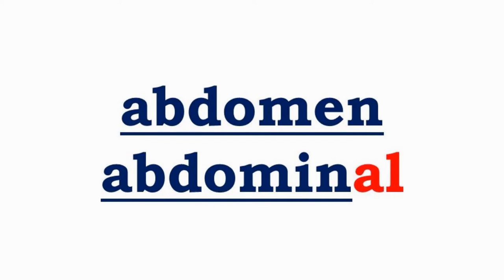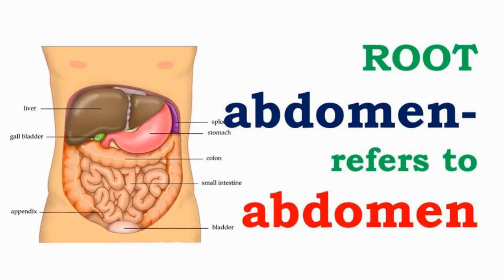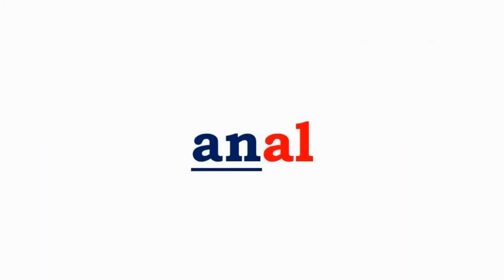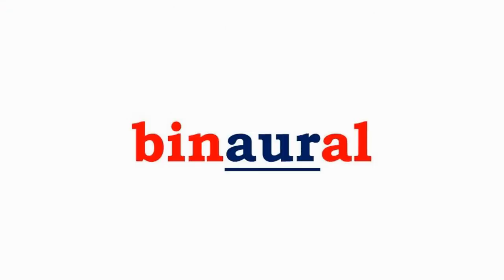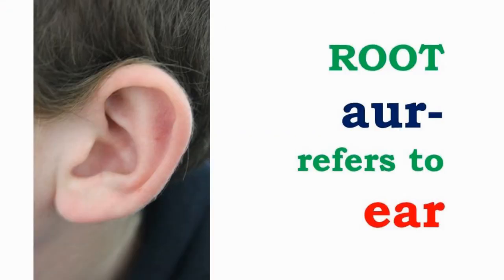Abdomen or abdominal have the root abdomen, which means of or pertaining to the abdomen. Anal has the root an, which means of or pertaining to the anus. Binaural has the root or, which means of or pertaining to the ear.